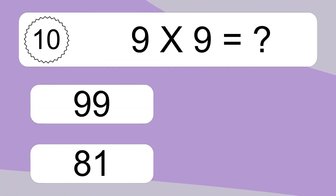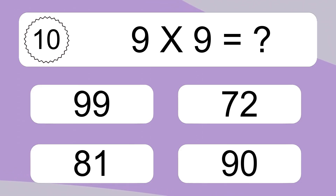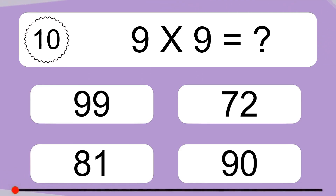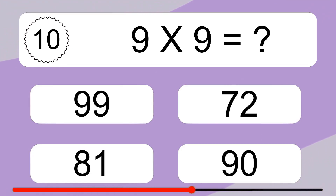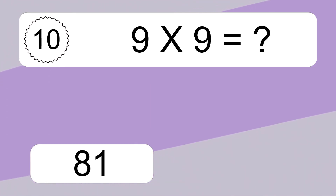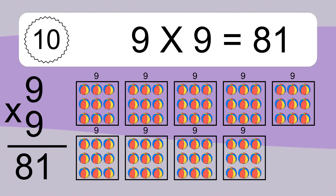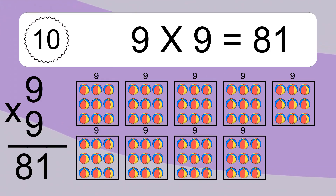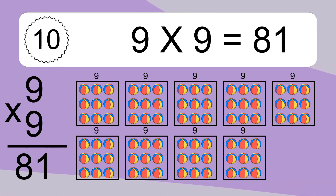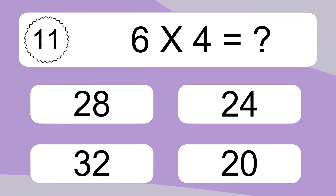9 times 9 equals what? 9 times 9 equals 81. We have 9 boxes, and each box has 9 colorful balls inside. If you count all the balls in all the boxes together, you will have 9 times 9 balls. This equals 81 balls.